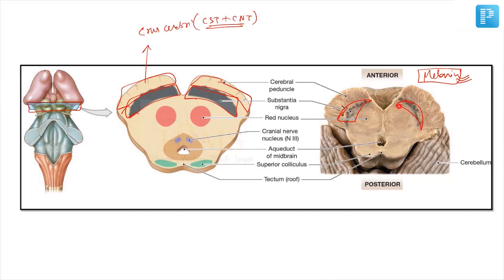You can also see this is the cerebral aqueduct of Sylvius where the CSF was passing. Around this cerebral aqueduct of Sylvius there is some gray matter which is called periaqueductal gray.